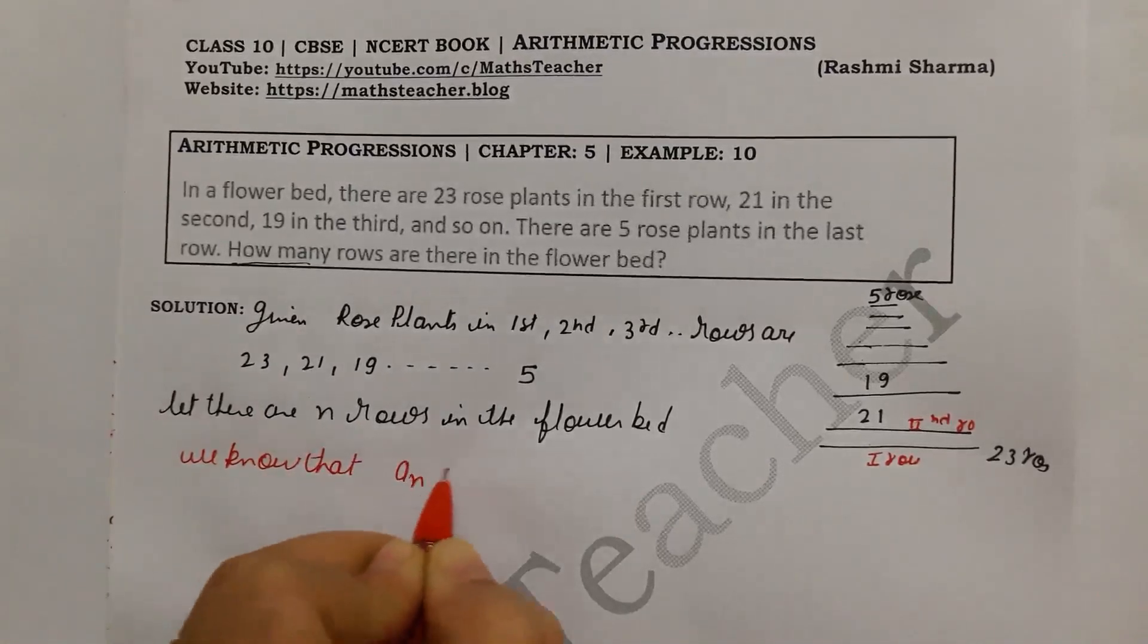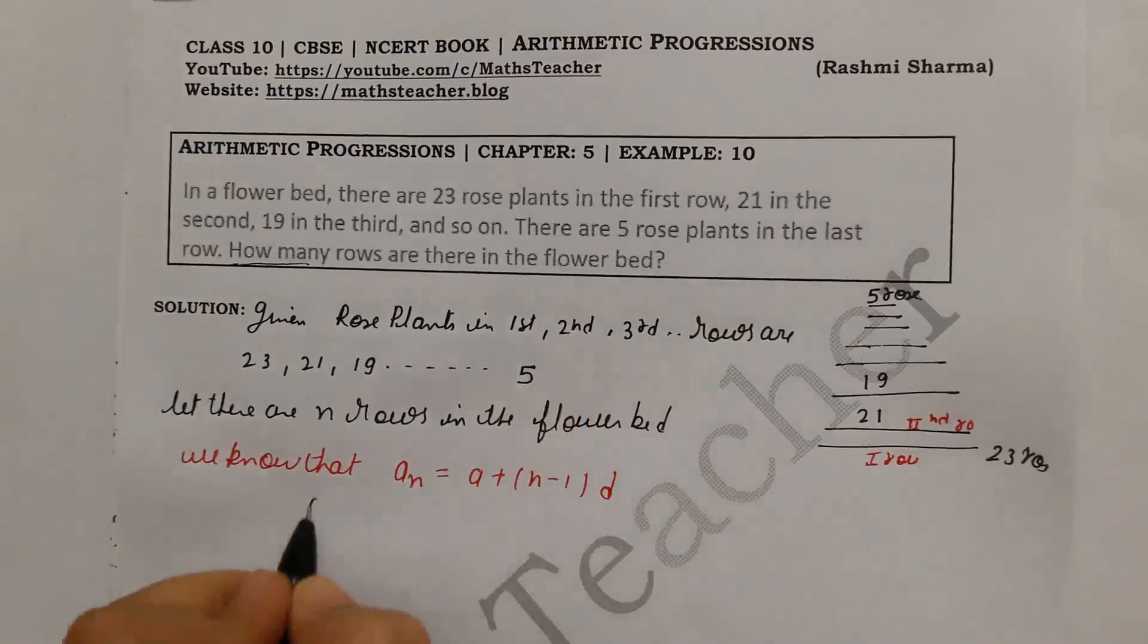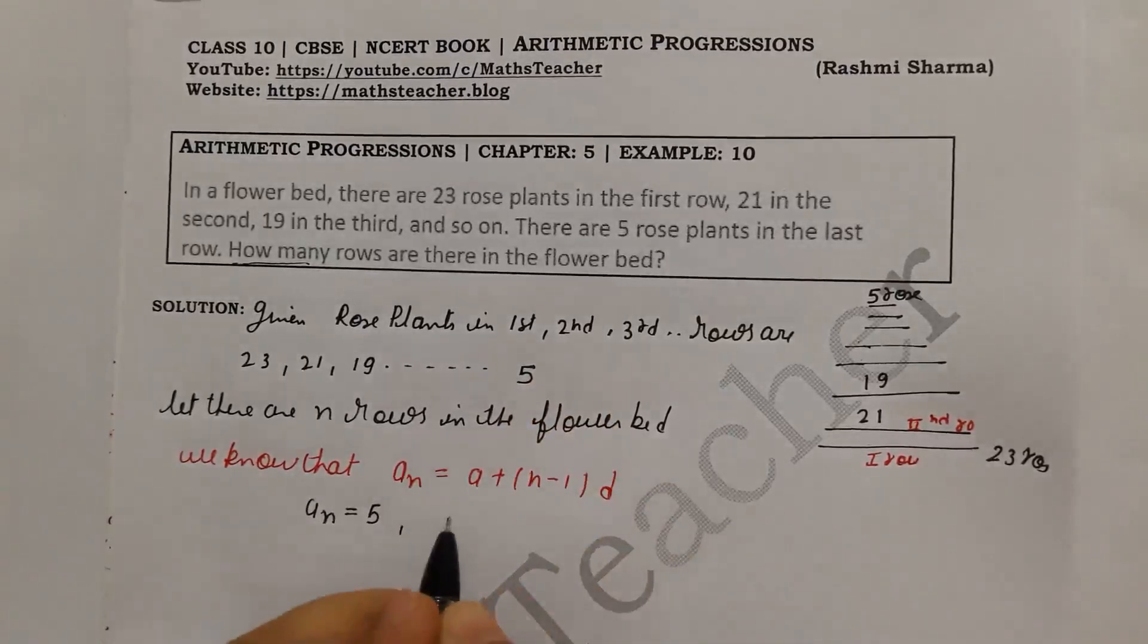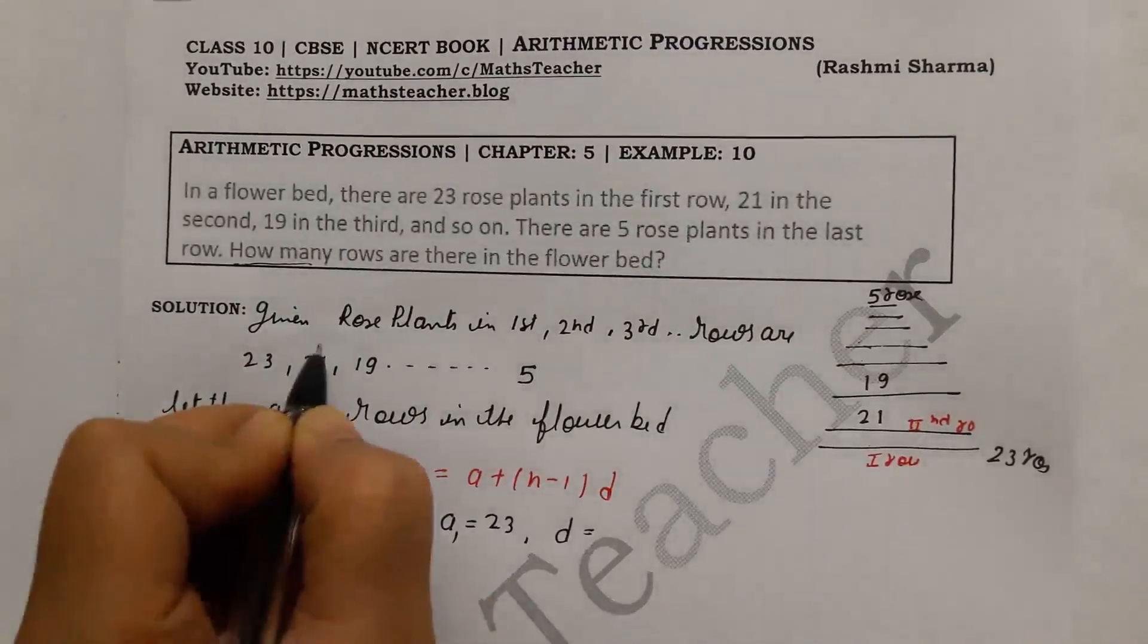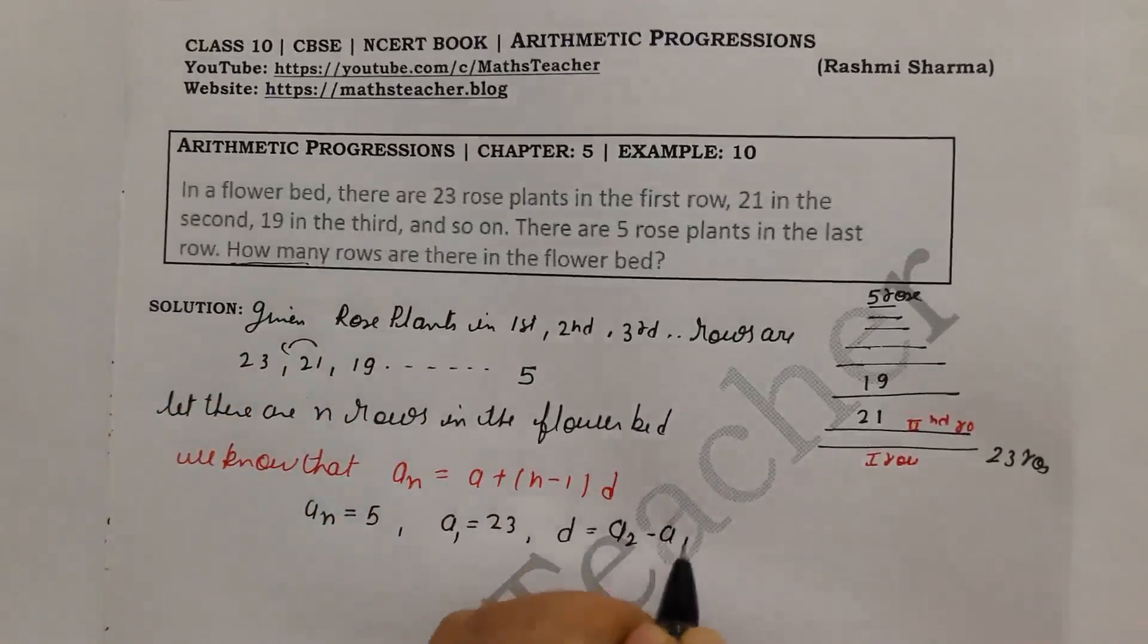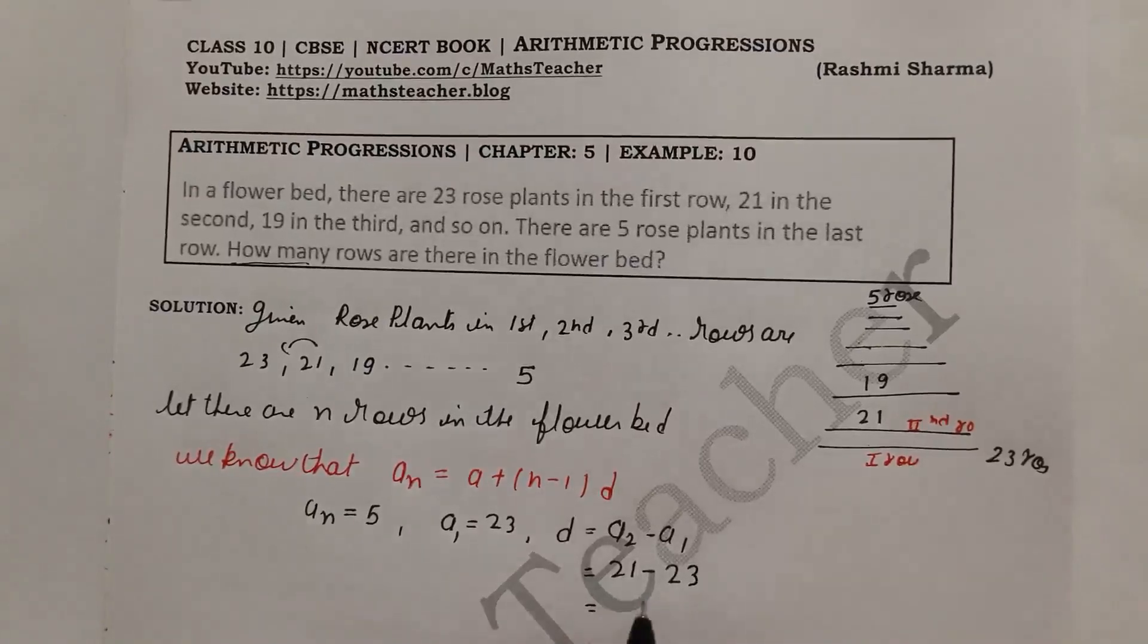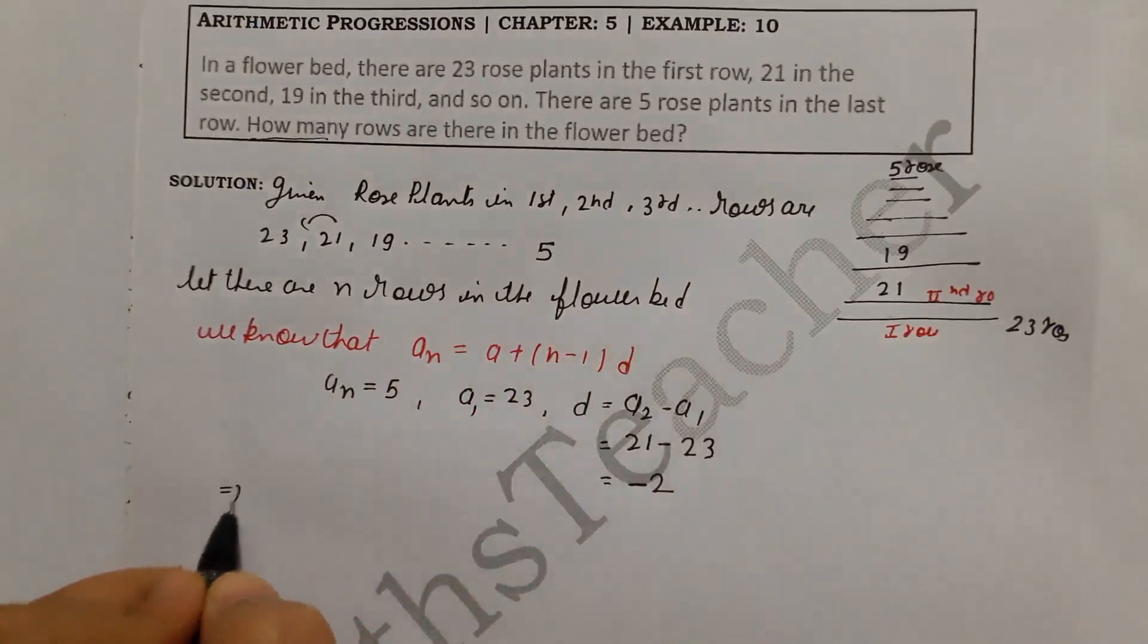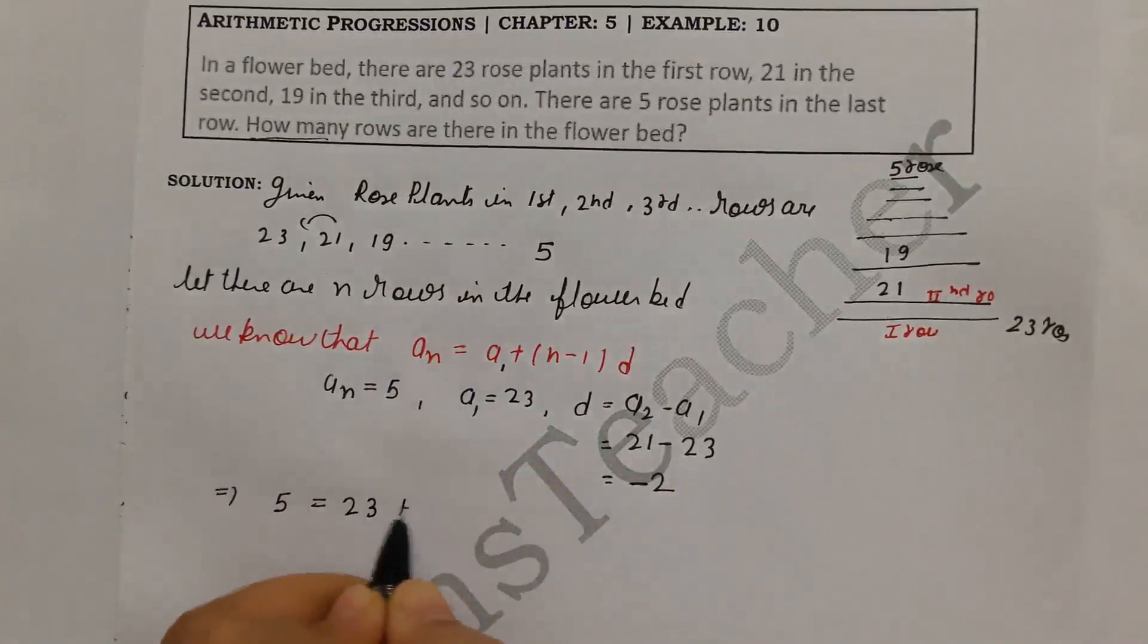We know that a_n = a + (n-1)d. Here, the last term a_n = 5, and the first term a or a_1 = 23. We find d: d = a_2 - a_1 = 21 - 23 = -2. So we have 5 = 23 + (n-1)(-2).